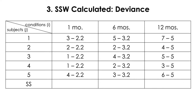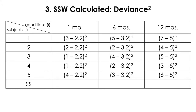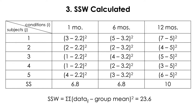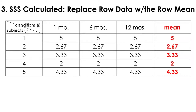SSW — which was actually the SSR in the between-subject design — is calculated the same way: subtract the group mean from each data point in that group, square the deviances, add them all up, and you get 23.6. Again, this should be the same as before. What's different in within-subject design is that this SSW is further partitioned into SSS and an error term.